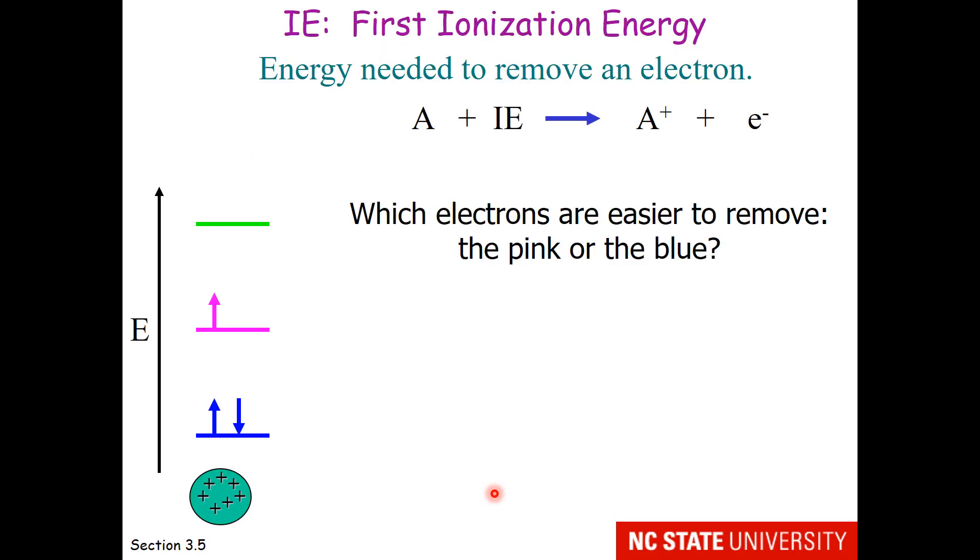One needs to understand orbital energies to understand ionization energy. Ionization energy is the energy needed to remove an electron. So if you consider an atom that is neutral and you put energy into the system, you can make a cation by removing one electron from that atom. We're going to be talking about first ionization energy, which is the energy required to remove the first electron.